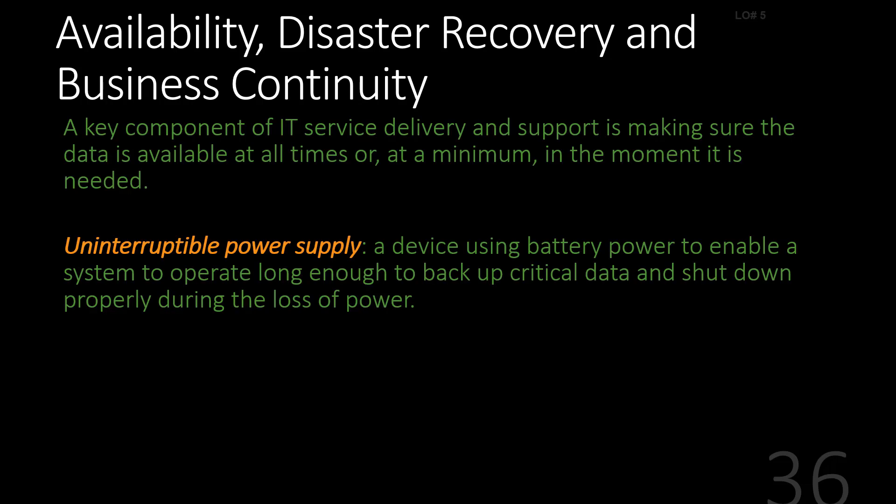One last thing you want to make sure you have is availability. Disaster recovery and business continuity are key issues there. Lightning strikes, you might lose power, you may have an earthquake, floods — all kinds of things could take place. There could even be a political event that results in your building getting blown up. Depending on the nature of the event, you want to have some way to recover from that.